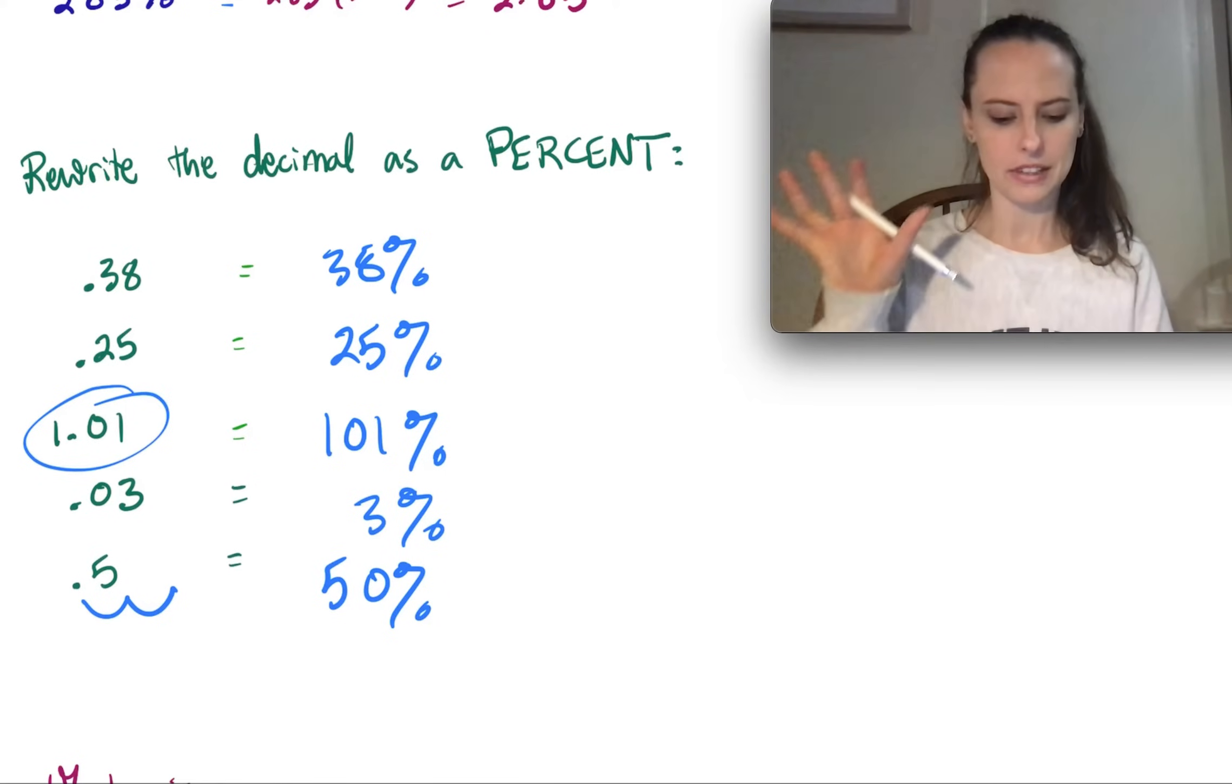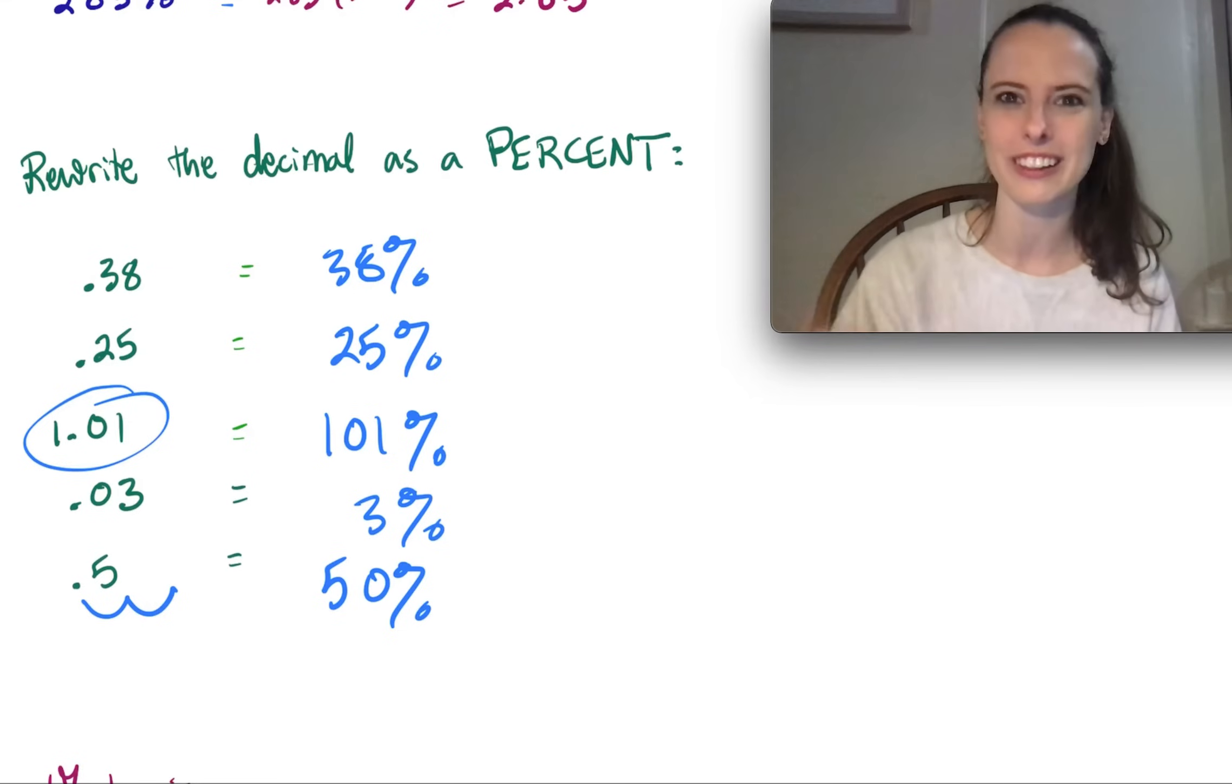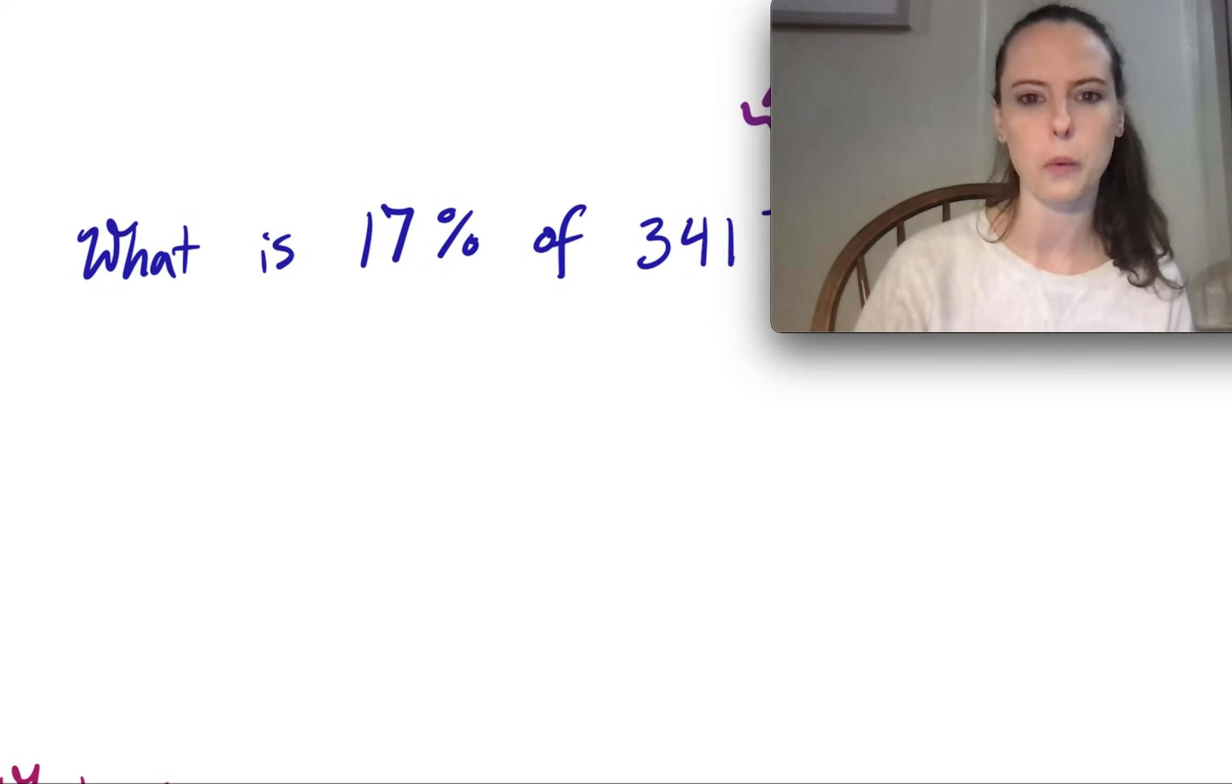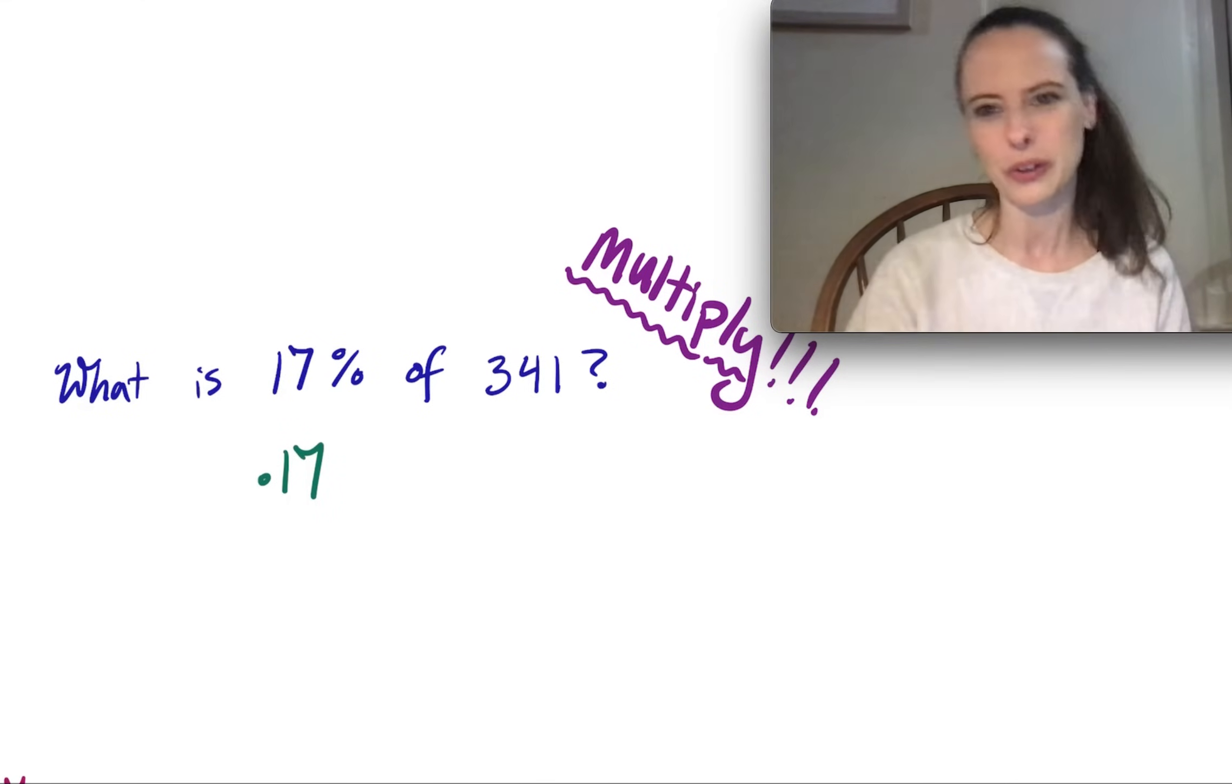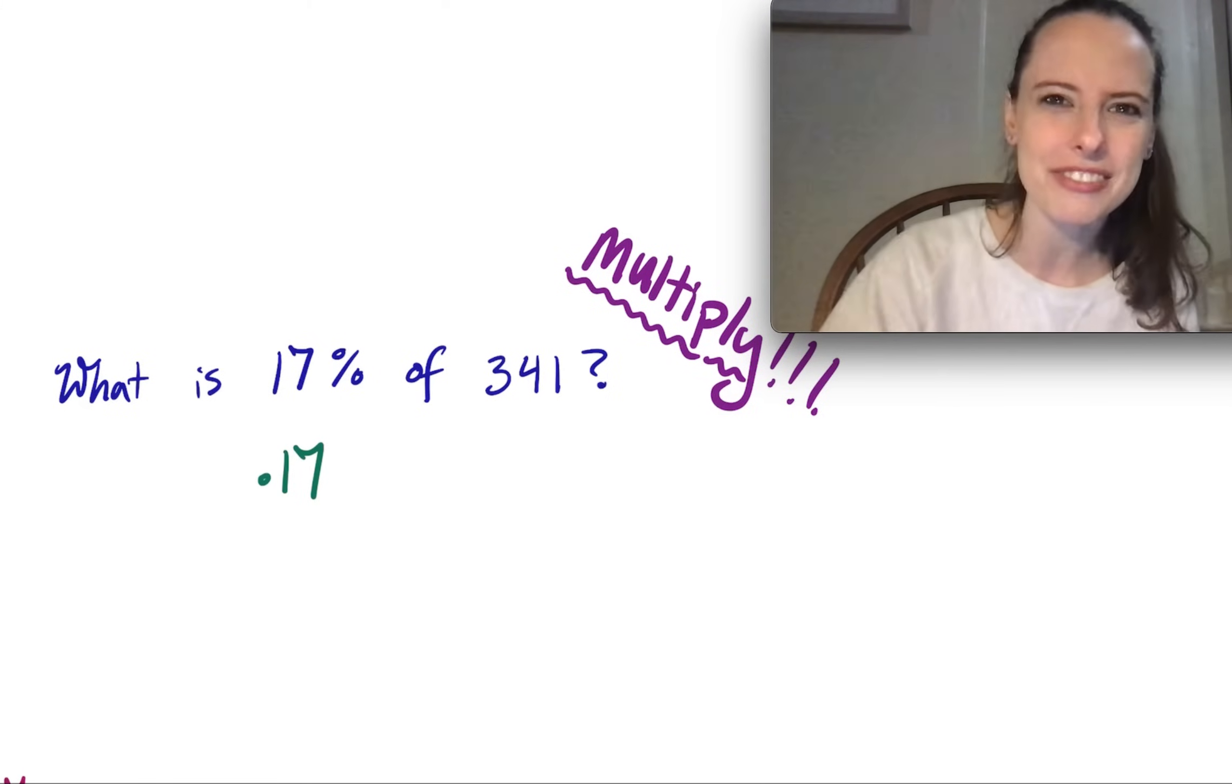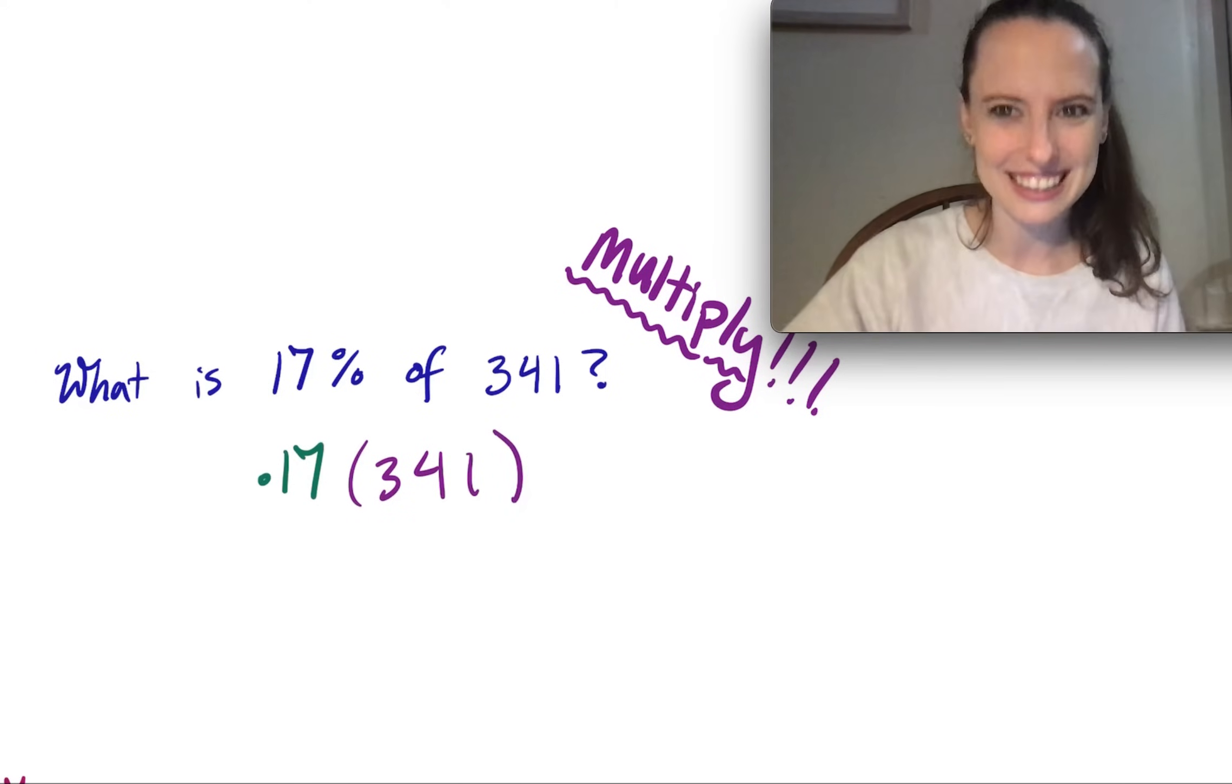So now that you're a pro at converting between decimals and percents back and forth, let's go back to our original question. The original question said, what is 17% of 341? Well, now we know that 17% is really just .17 when we multiply times .01. And now to find 17% of 341, all we have to do is multiply this .17 times 341. It's really that simple.